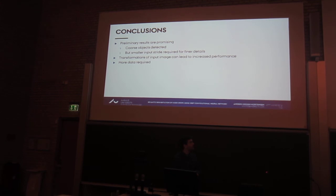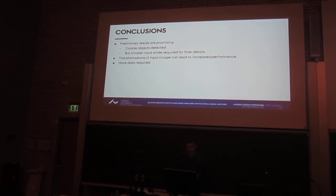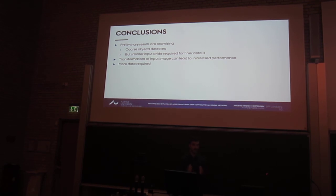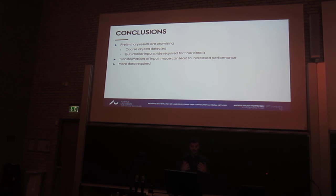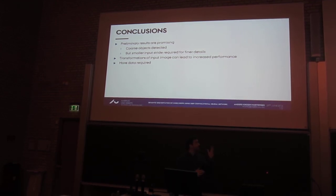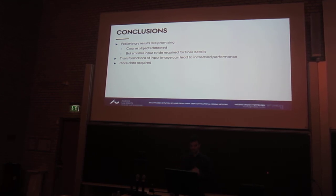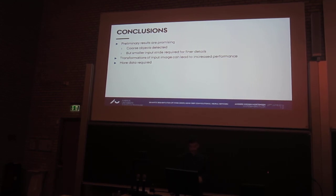In conclusion, these preliminary results are promising. At the moment they give a very coarse object detection, but if we use a smaller stride and extract features earlier in the network, we can get finer detail. Also, passing the same image through several times with different transformations may lead to increased performance. But at the moment we need a lot more data.